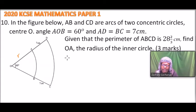We have been given the perimeter of ABCD. Therefore we can equate the perimeter and be able to get the radius r. The radius of the big circle will be r plus 7, that is from O to C.